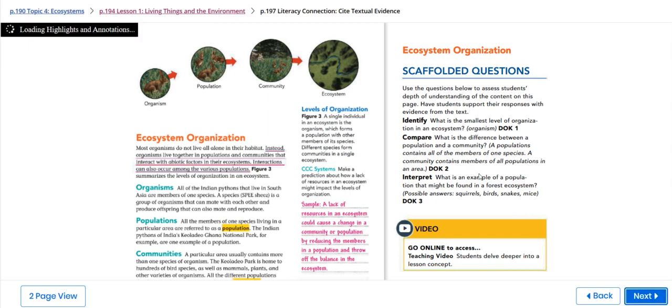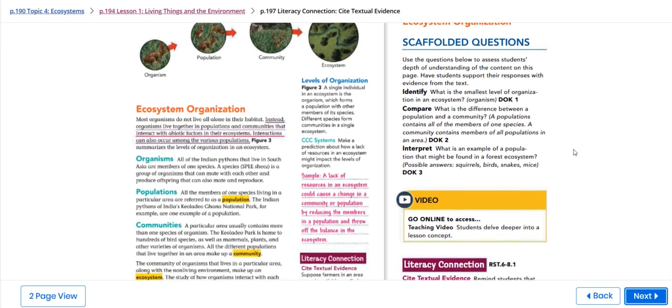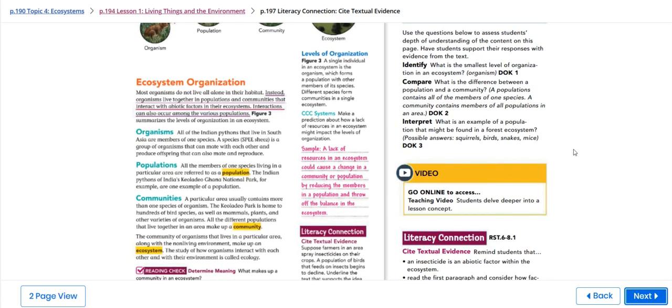Most organisms do not live all alone in their habitat. Instead, organisms live together in populations and communities that interact with abiotic factors in their ecosystems. Interactions can also occur among the various populations. We have organism, population, and communities based on the variety of processes.